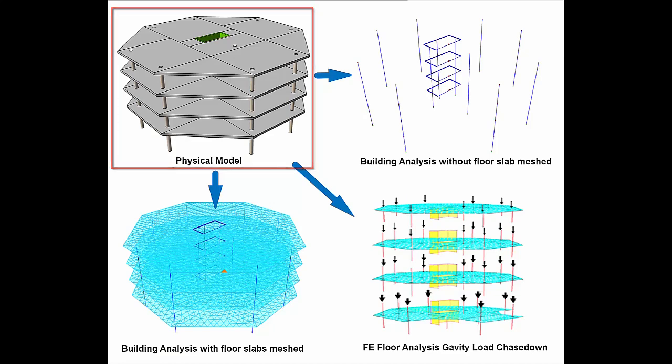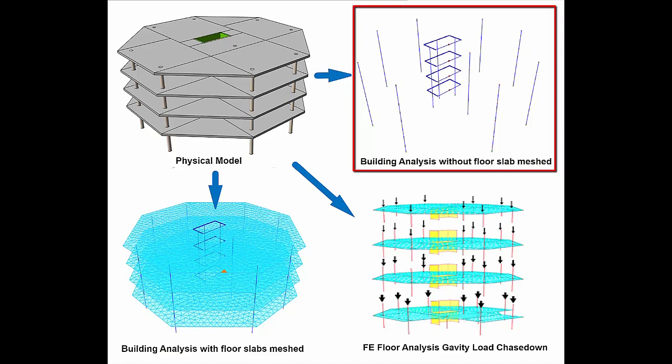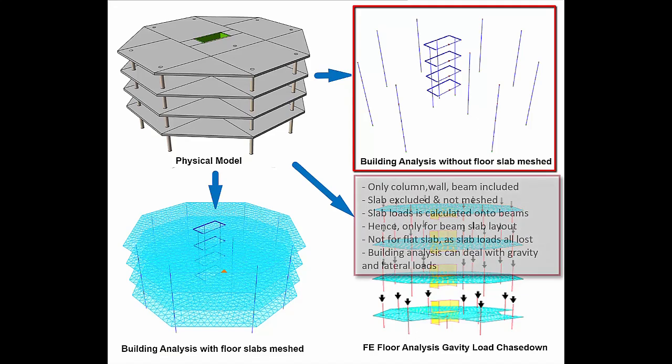Between the lift core wall is a beam. The first analysis method is building analysis without including the slab by meshing. The analytical model is a 3D model of all stories consisting only of frame members, that is, walls, columns, and beams. The slabs are excluded. Building analysis is capable of analyzing both gravity and lateral loads as the underlying analytical model includes all elements from top to bottom story.